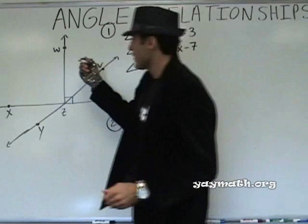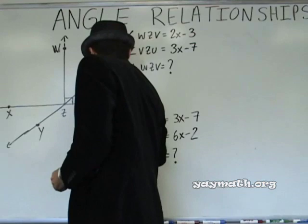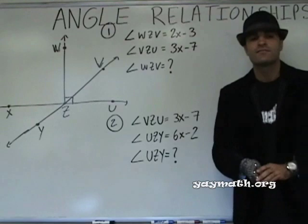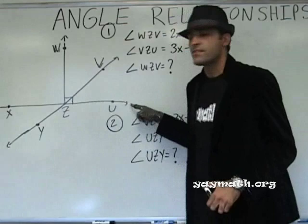Alright. Make this bigger. Thank goodness for MJ, man. That song came out when I was like three years old. So, two angles that are adjacent. Yes, sir? WZV. And? VZU. Fair enough. Okay. Questions about what adjacent means?